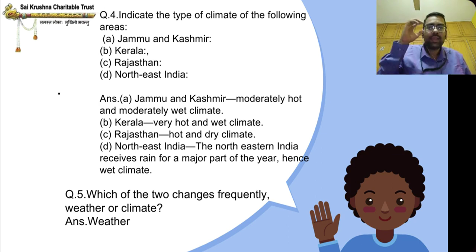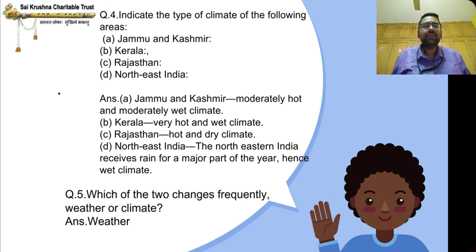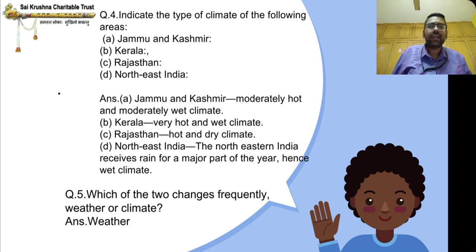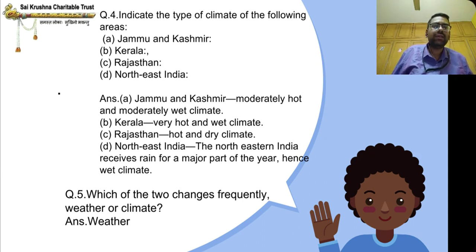Kerala — very hot and wet climate. Rajasthan — hot and dry climate.